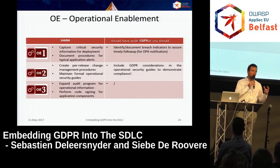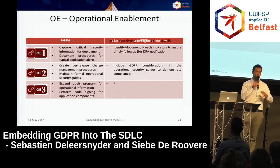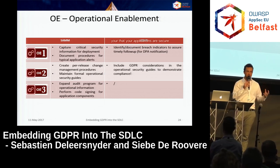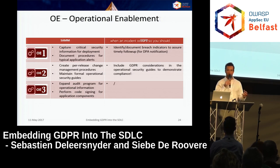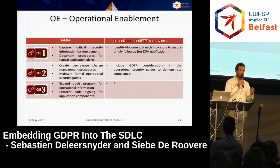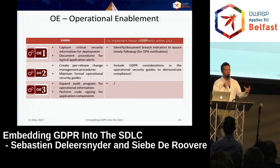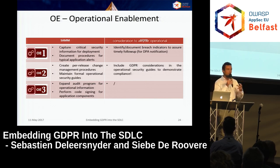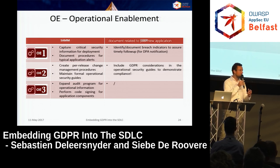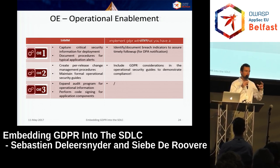For operational enablement, you should document everything you do to ensure your organization and applications are secure and that you take necessary steps when an incident occurs. Document breach indicators to assure timely follow-up. Most data protection authorities provide templates for incident follow-up that should be used. Check your local data protection authority's website to implement those documents in your data breach process, and include GDPR considerations in all operational security guides — ensuring you can prove GDPR was taken into account throughout the entire process.